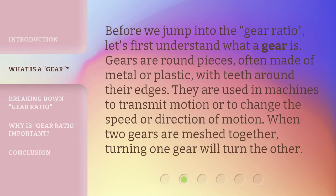Before we jump into the gear ratio, let's first understand what a gear is. Gears are round pieces, often made of metal or plastic, with teeth around their edges. They are used in machines to transmit motion or to change the speed or direction of motion. When two gears are meshed together, turning one gear will turn the other.